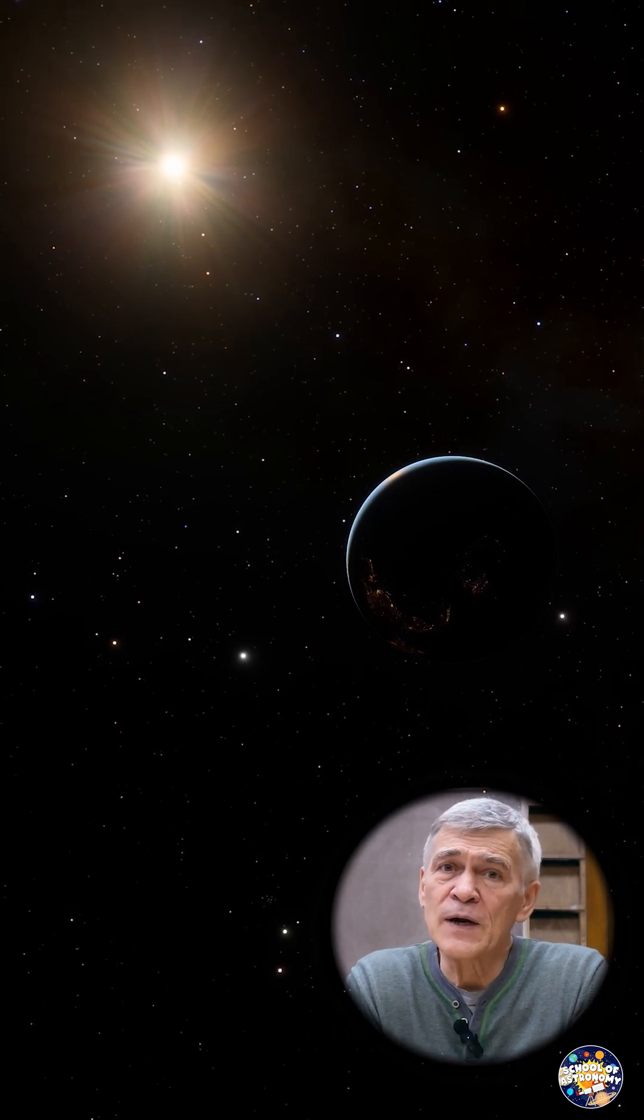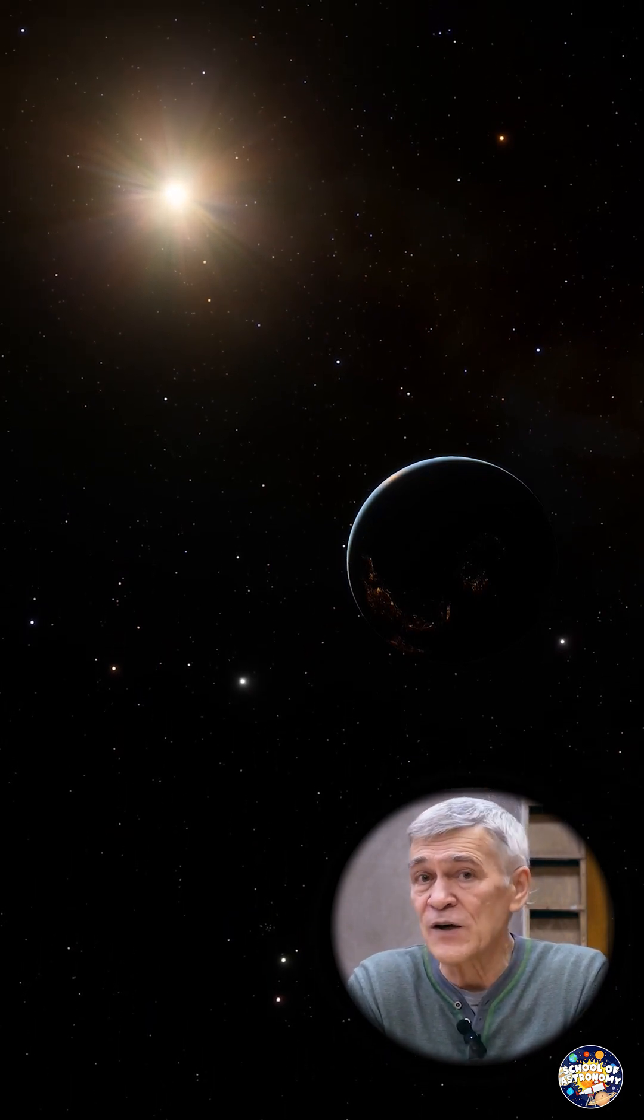Our neighbors, the stars surrounding the Sun, move relative to the Sun at a speed of approximately 25, 30, sometimes 50 km per second.